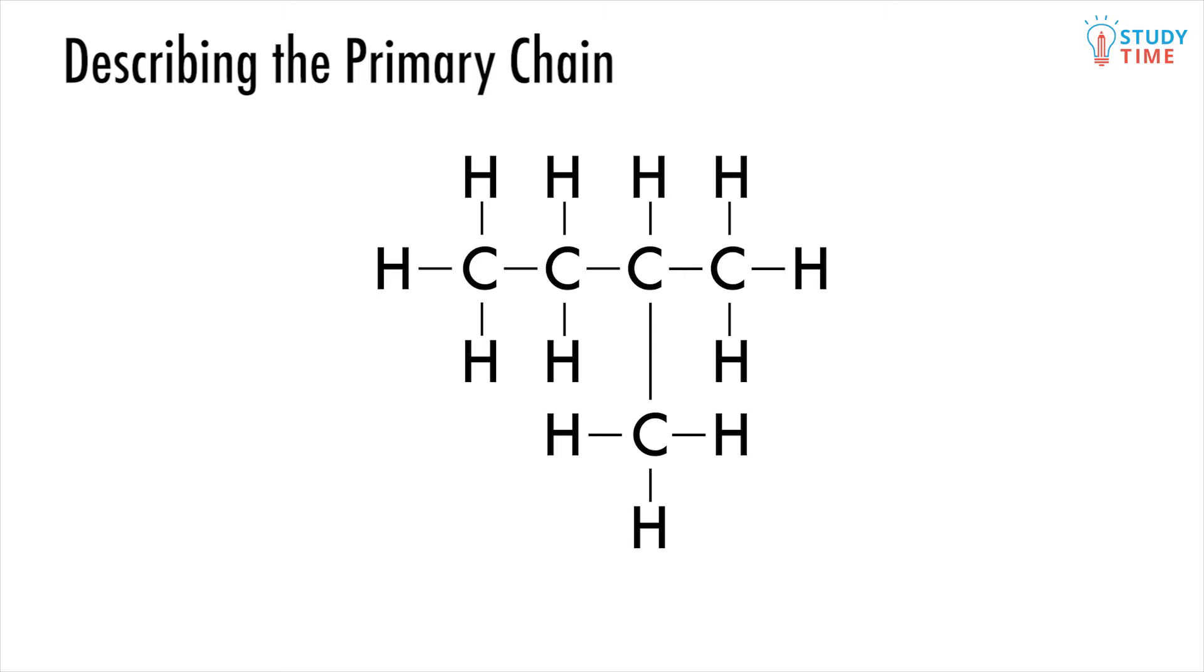Take a pen and draw a circle around what you think is the longest primary chain of carbons. Now if there was a possibility of a second chain, count out the carbons and see which one wins.